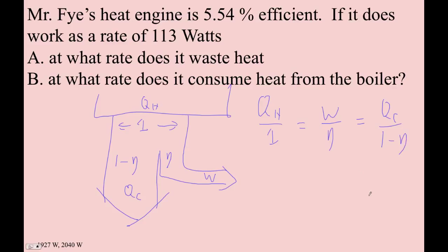Okay, so for example, I know that work, 113 over 0.554, that equals QH over 1. So that is QH. And that also equals QC over 1 minus 0.554.